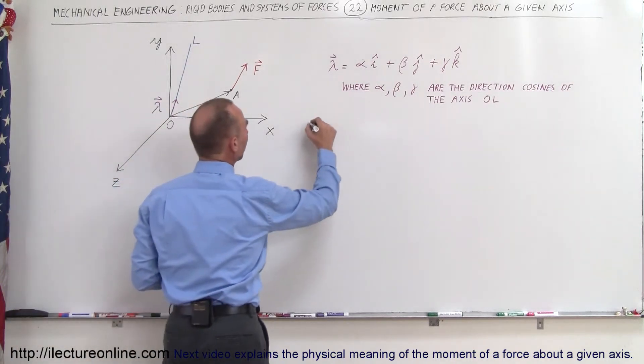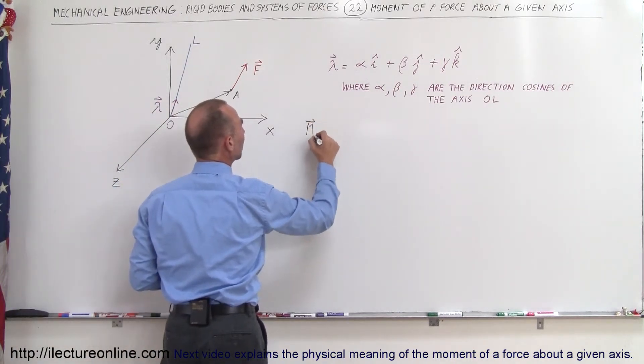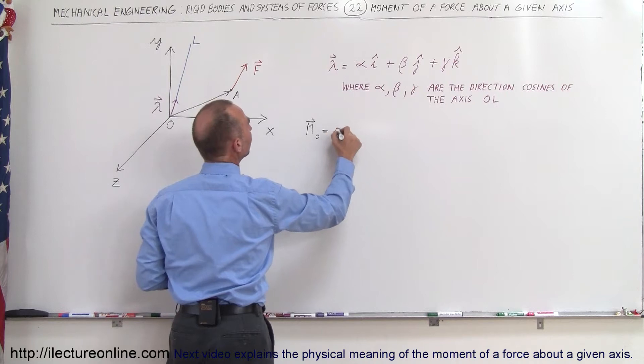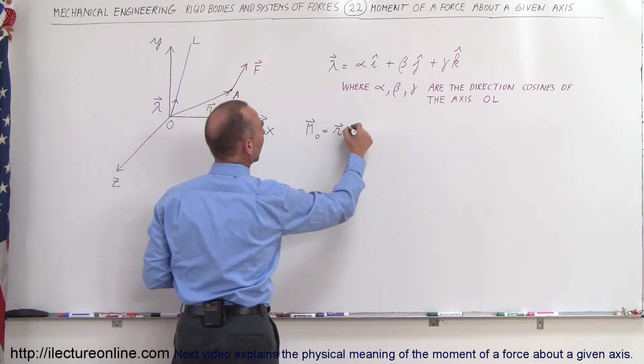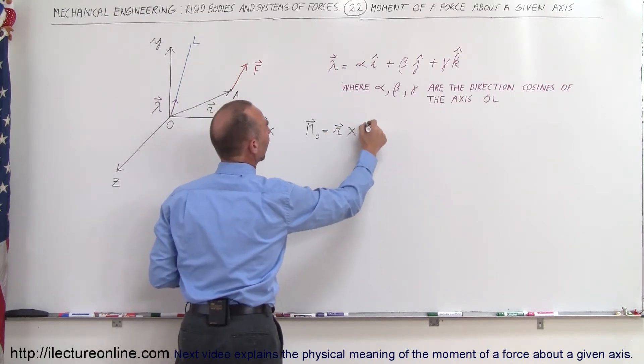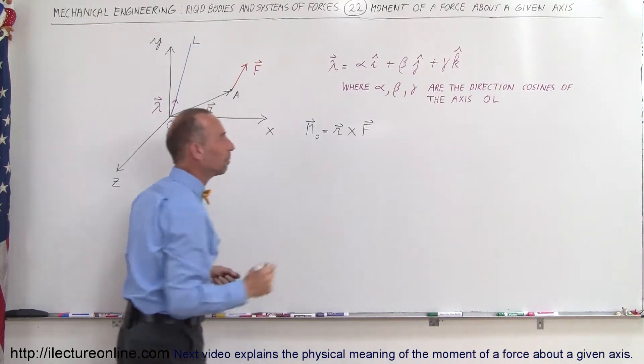We can then say that the moment about the origin, which is a vector quantity, is equal to the cross product of the position vector and the force acting at that particular spot.